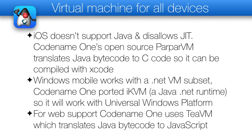The last VM we have is one we didn't write at all — it's TeaVM, and it works beautifully. It transpiles Java bytecode to JavaScript and works in a very similar way to GWT, but doesn't require source code — it works with bytecode. It's more efficient and more modern. It works with threads, which is really impressive. It's one of the few solutions we were able to take as-is and just use.